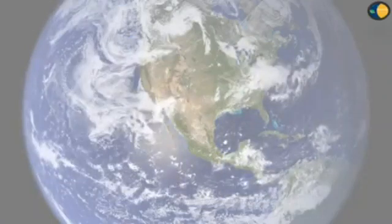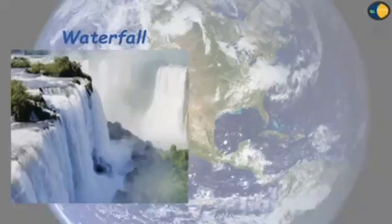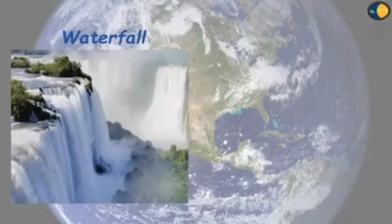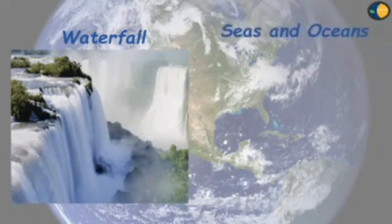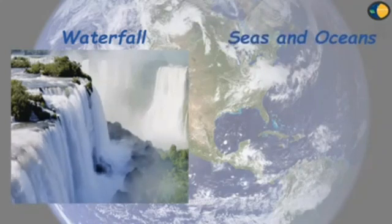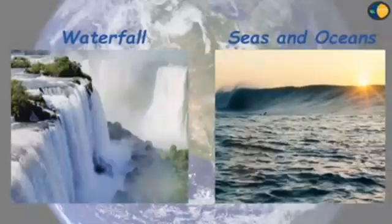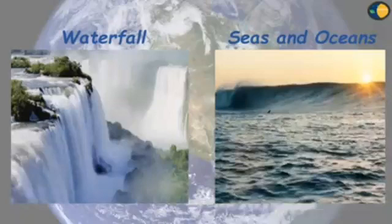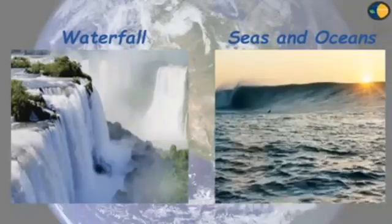Next water body is waterfall. When water falls from a great height, it forms a waterfall. Waterfalls look very beautiful from a distance. Next is seas and oceans. These very large water bodies are called seas and oceans. They have salty water and we cannot use this water for cooking or drinking. Many animals live in the seas and oceans.